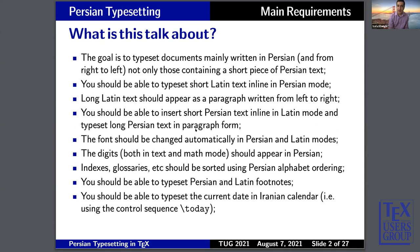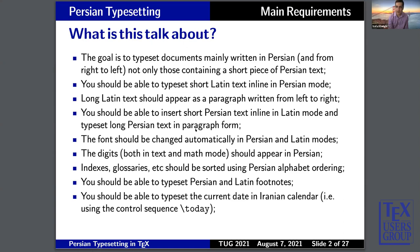What I mean by Persian typesetting is that I want to typeset a document which is mainly written right to left — not just a short piece of Persian text, but an entire document. You should be able to typeset Latin text inline in Persian mode, and also write paragraphs in left-to-right mode with Persian text inline inside Latin mode. The font should change automatically between Persian and Latin modes, and digits in text and math mode should appear in Persian, with the ability to switch between Persian and Latin digits in math mode. Indexes, glossaries, etc. should be sorted using Persian alphabets.